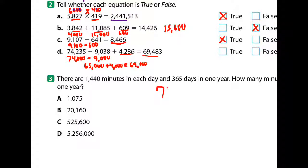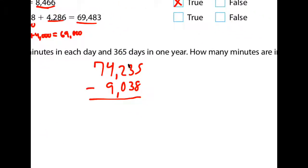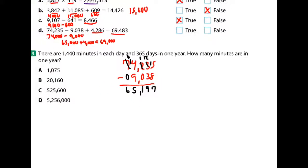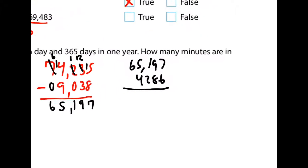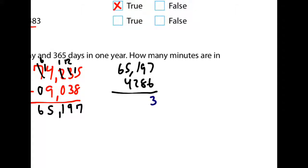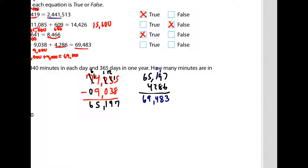Close doesn't mean it definitely is, so: seventy-four thousand two hundred thirty-five minus nine thousand thirty-eight. Fifteen minus eight is seven, twelve minus three is nine, one minus zero is one, fourteen minus nine is five, six minus nothing is six. Now I need to add that with four thousand two hundred eighty-six. Seven and six is thirteen, nine and one is ten and eight is eighteen... sixty-nine thousand four hundred eighty-three — and that is true.